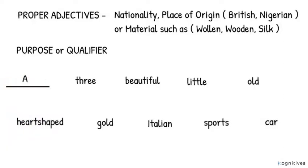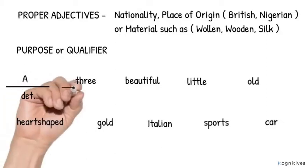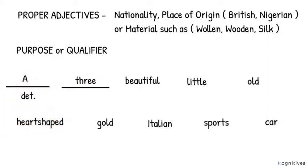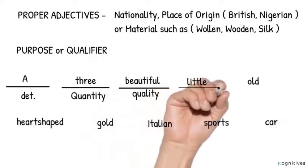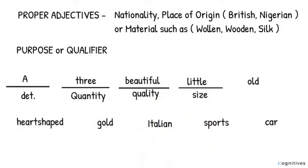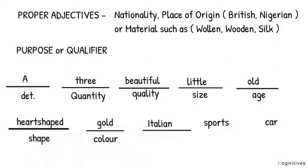A is a determiner. Three is quantity. Beautiful, quality. Little, size. Old, age. Heart-shaped, shape. Gold, color. Italian, proper adjective. Sports, purpose. And then car is a noun.